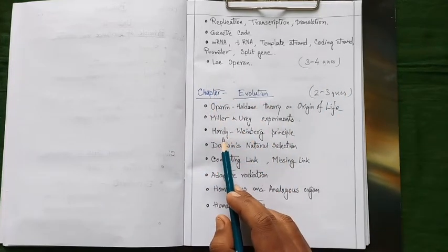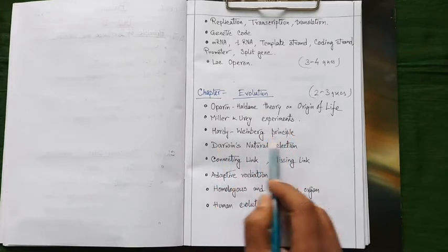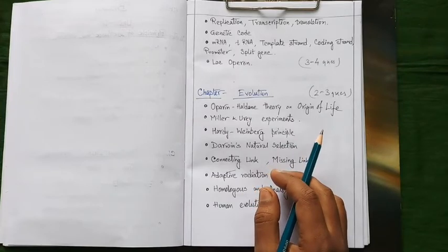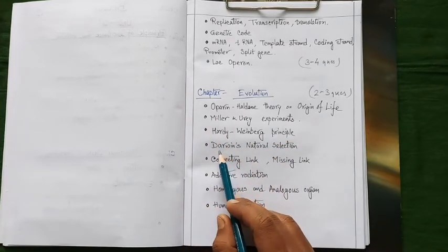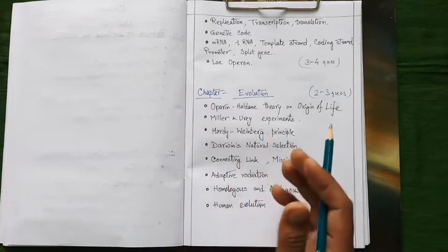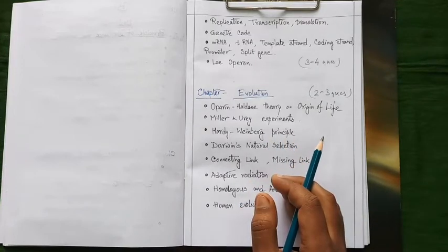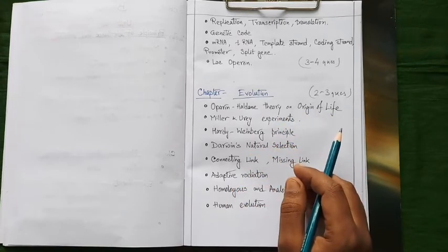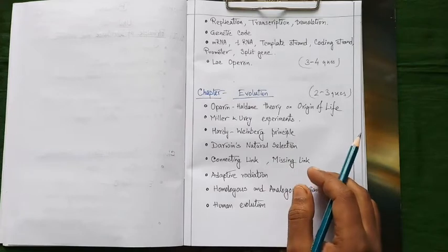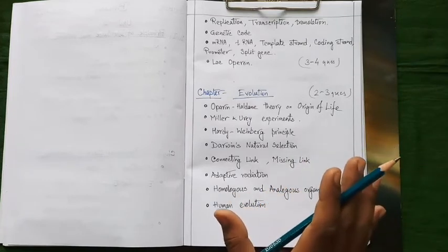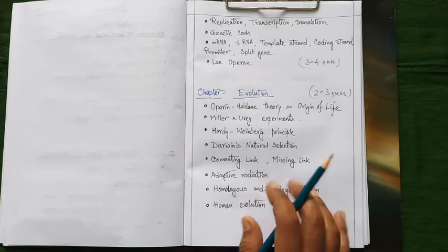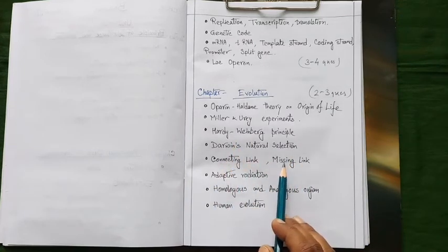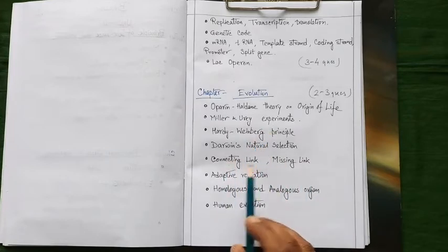Our next topic is Hardy-Weinberg principle. You need to know the definition of Hardy-Weinberg principle as well as different factors affecting the equilibrium conditions. Our next topic under this chapter is Darwin's natural selection. You have to memorize all the postulates put forward by Darwin as well as the explanation of evolution of giraffe necks by Darwin, selection of Darwin finches, etc. These are also very important sections under this chapter. Next we have to memorize the definition and examples of connecting link and missing link. You can also expect the difference between these two terms.